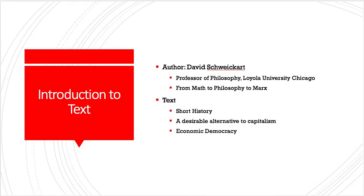The text itself is, as David says, the fourth version of this text. The one I am reading is the second edition of After Capitalism. He says this really originated with his PhD thesis in philosophy that got turned into one book and then that book led to this book. What he's looking at is the shortcomings of capitalism and a desirable alternative to capitalism, which he calls economic democracy. That's really what we're going to be looking at throughout the book in these lectures.